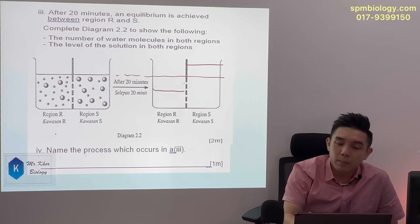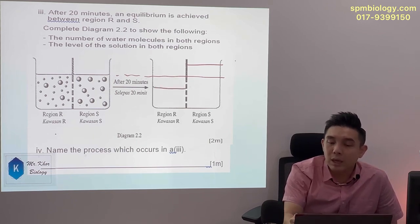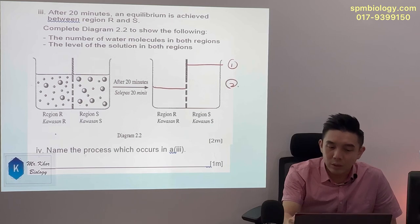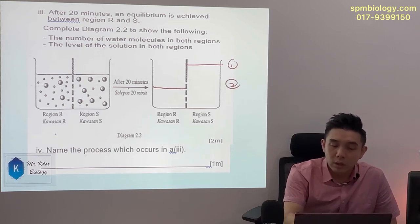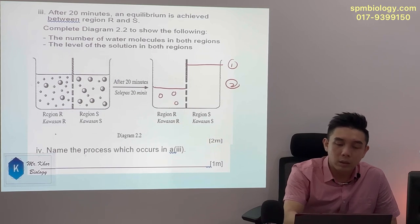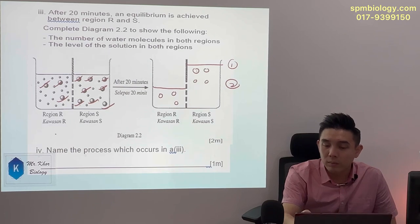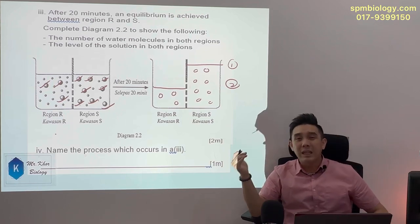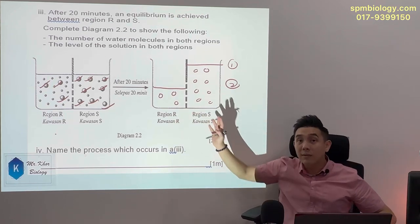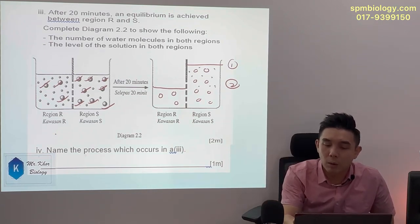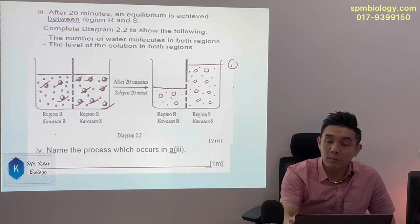You get one mark by drawing the correct level. The second mark requires you to draw the sucrose molecules — three on the left side and eight on the right side. The orientation doesn't matter as long as the numbers are correct. You also have to show more water on the left side compared to region R. Then you earn your second mark.